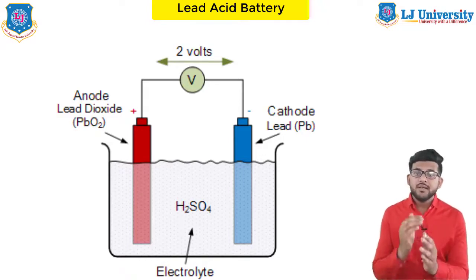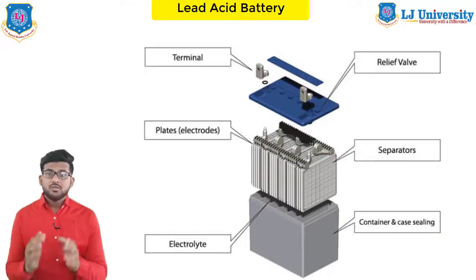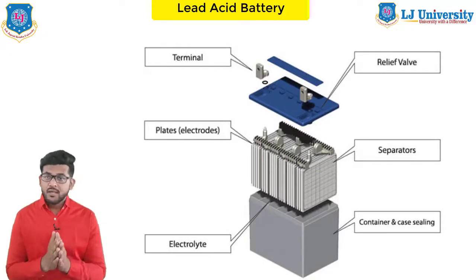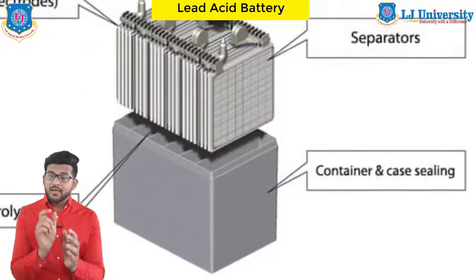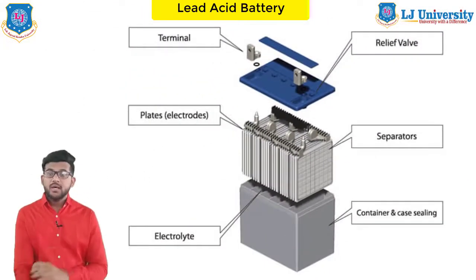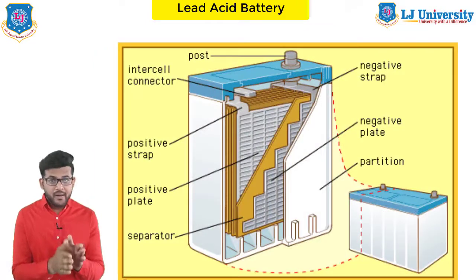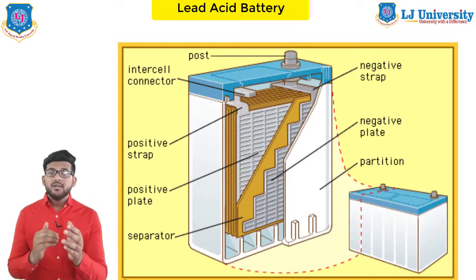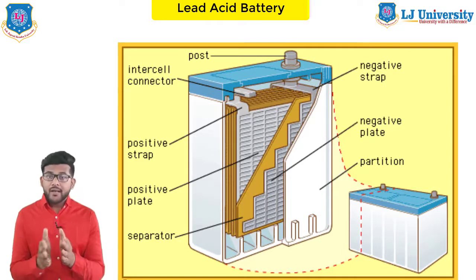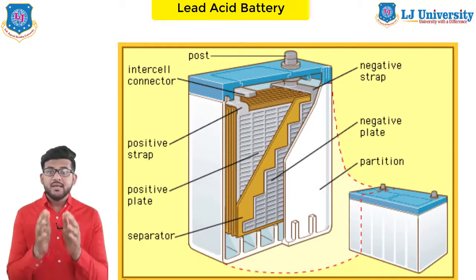Now let's see the construction of the lead acid battery. The various parts of the lead acid battery are shown in this figure. The container and the plates are the main parts. The container stores the chemical energy which is converted into electrical energy by the help of the plates. The container of the lead acid battery is made of glass or lead-lined wood, ebonite, hard rubber, bituminous compound, ceramic materials, or molded plastics, and they are sealed at the top to avoid discharge of the electrolyte.